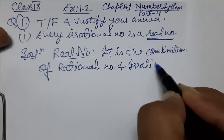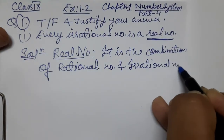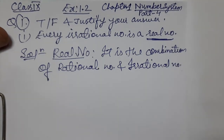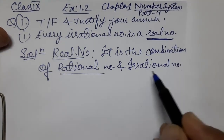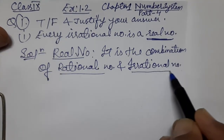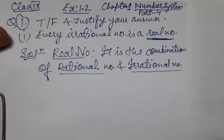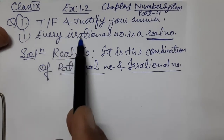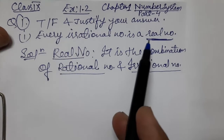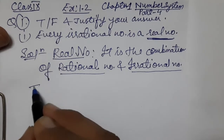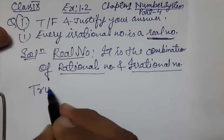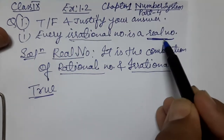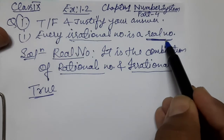In the combination of these two numbers — rational and irrational — every irrational number is a real number. Yes, of course. So it is TRUE. Why? Because all irrational numbers are part of real numbers.